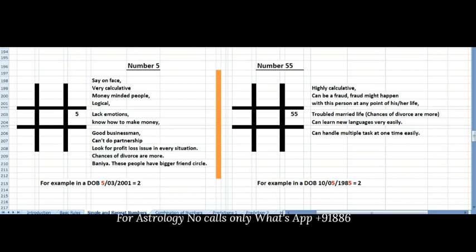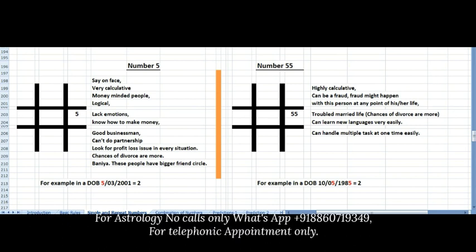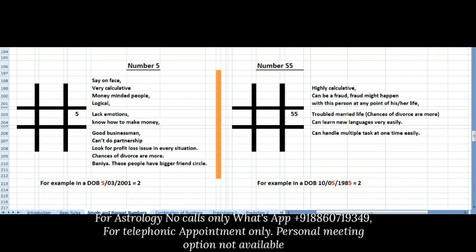Whomsoever they are talking to, or having any kind of relationship with, first of all they will see what benefit they are getting out of it. This is the nature because of which chances of divorce are very high in number 5 people, especially when it comes in the destiny.